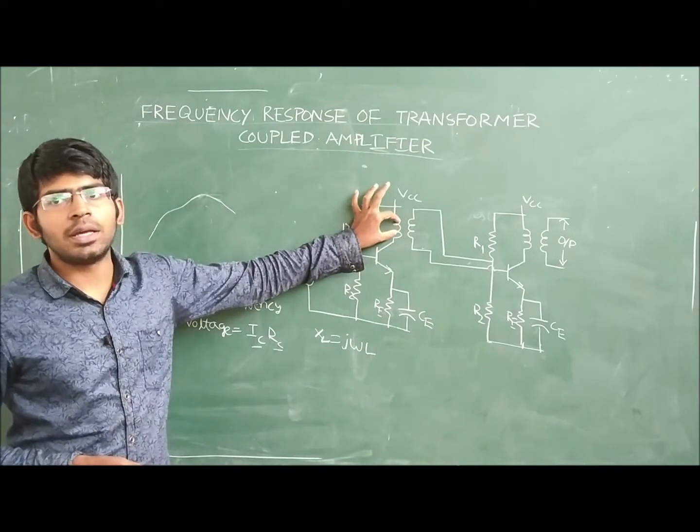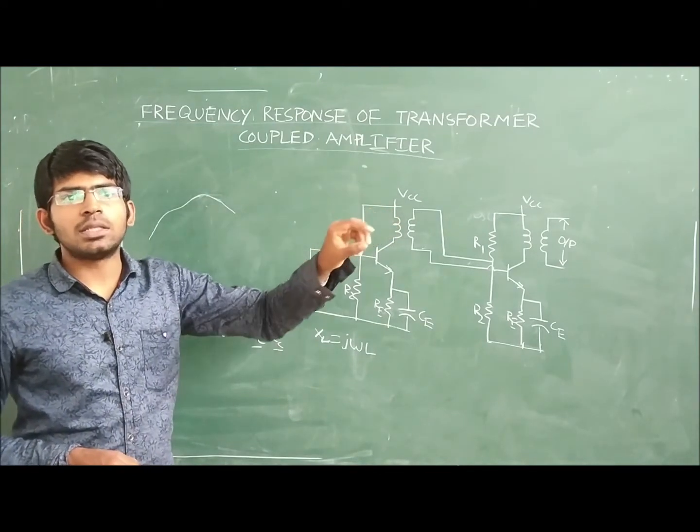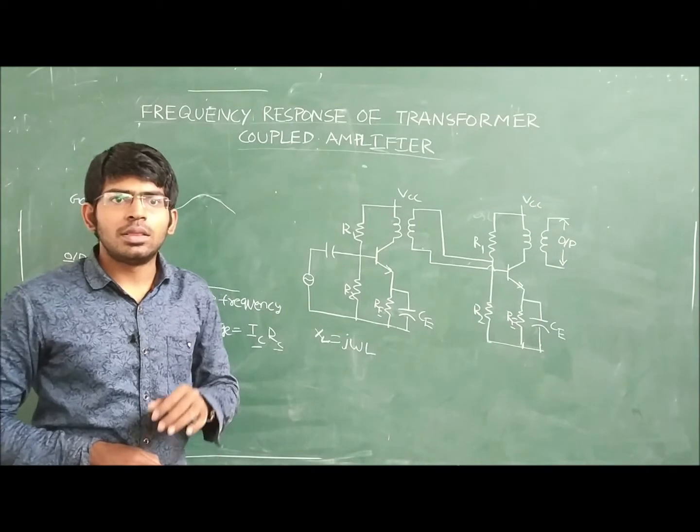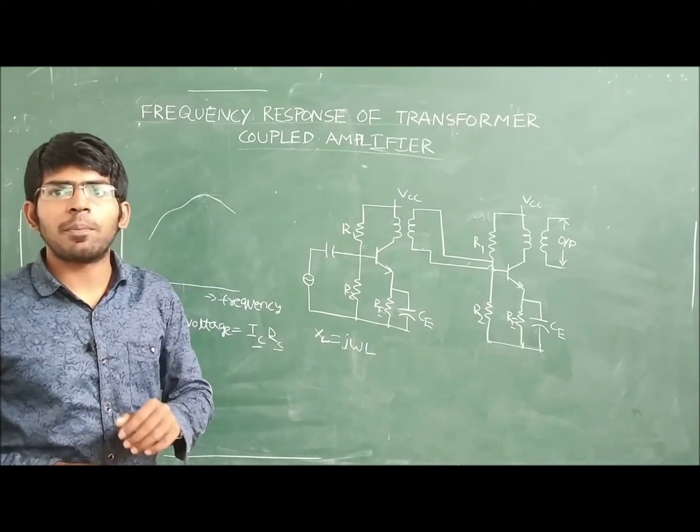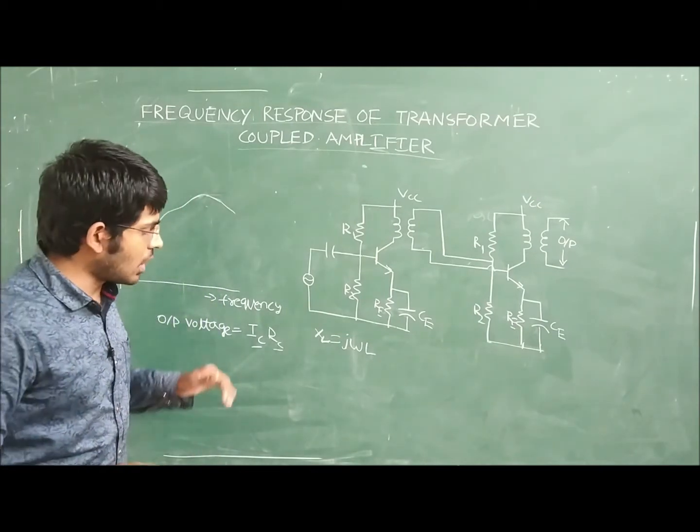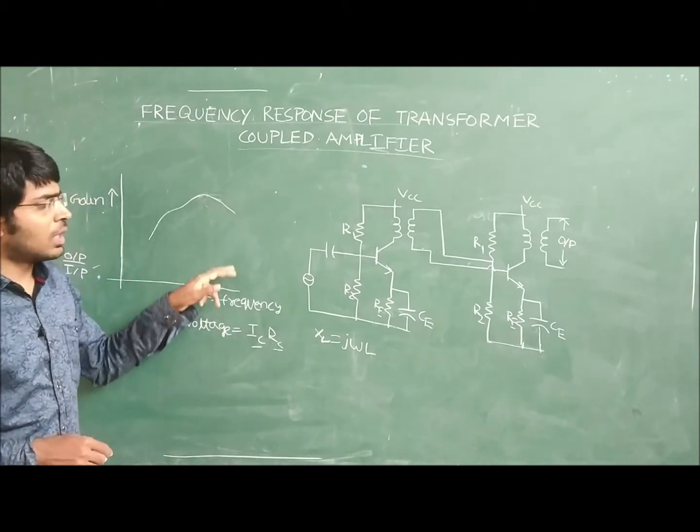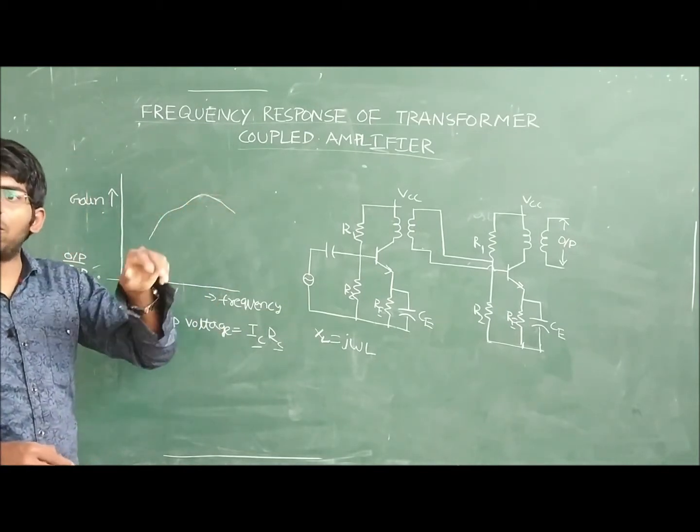But at higher frequencies, in between these two windings, a capacitance is observed. This stray capacitance is making the output voltage become low. That is why gain is falling at the high frequencies also.